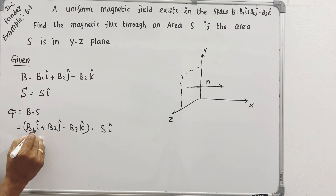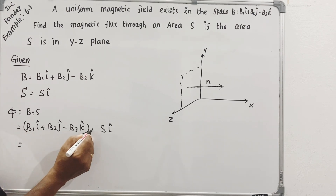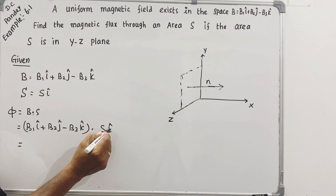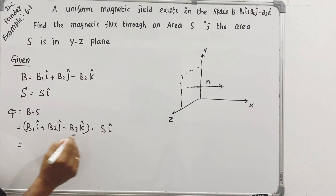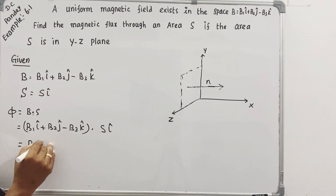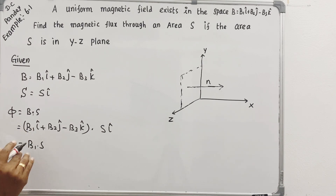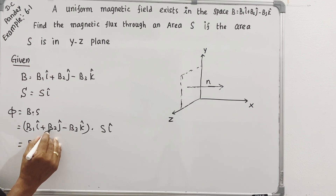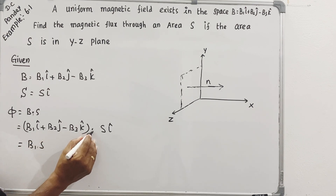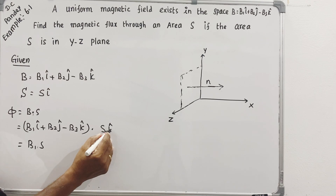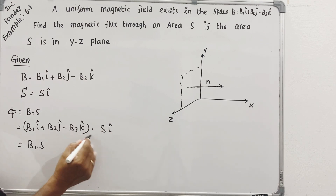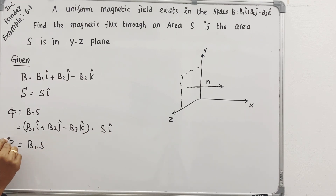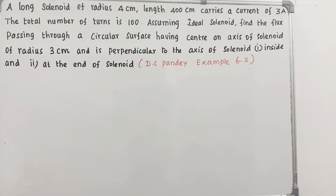phi = B1·i dot S·i. Since i·i = 1, this gives B1·S. Then B2·j dot i = 0, so that term vanishes. Therefore phi = B1·S.